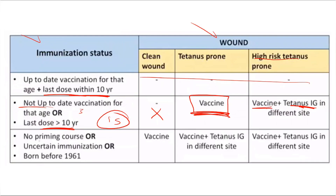For a patient who has not received the priming course, is unimmunized, uncertain, or was born before 1961 when there was no tetanus vaccine program: if the patient has a clean wound, advise them to go to a healthcare center to receive the vaccine. If the wound is tetanus-prone or high-risk, the patient should receive both immunoglobulin and the vaccine.